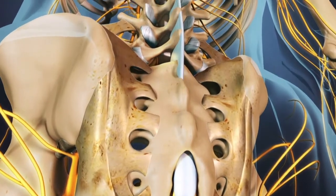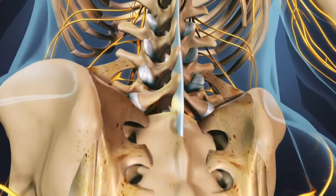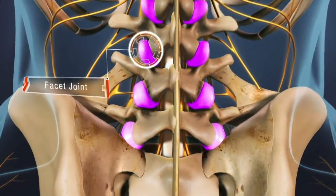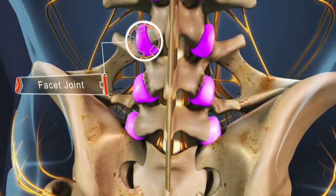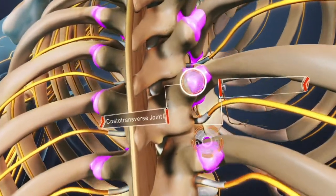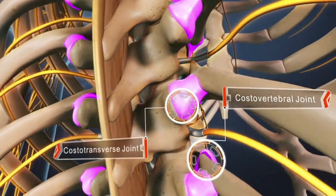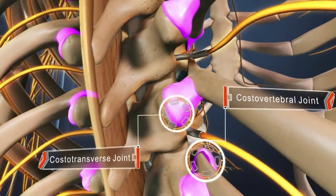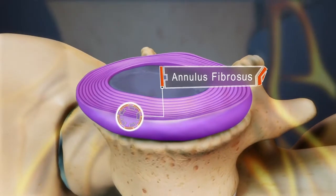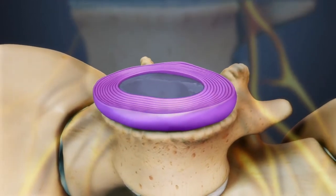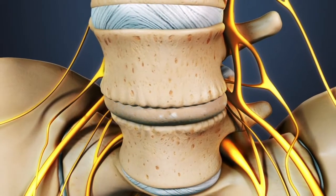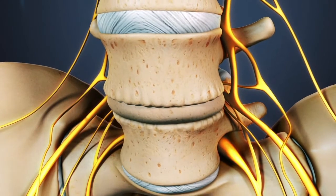The same process of inflammation and calcification can spread up the spine. It often occurs in the facet joints, which are small paired joints at the back of the spine. It can also occur at the costrotransverse and costovertebral joints, where the ribs connect to the spine and the upper back. The annulus fibrosis, the series of ligaments encasing the intervertebral discs, can also become calcified.